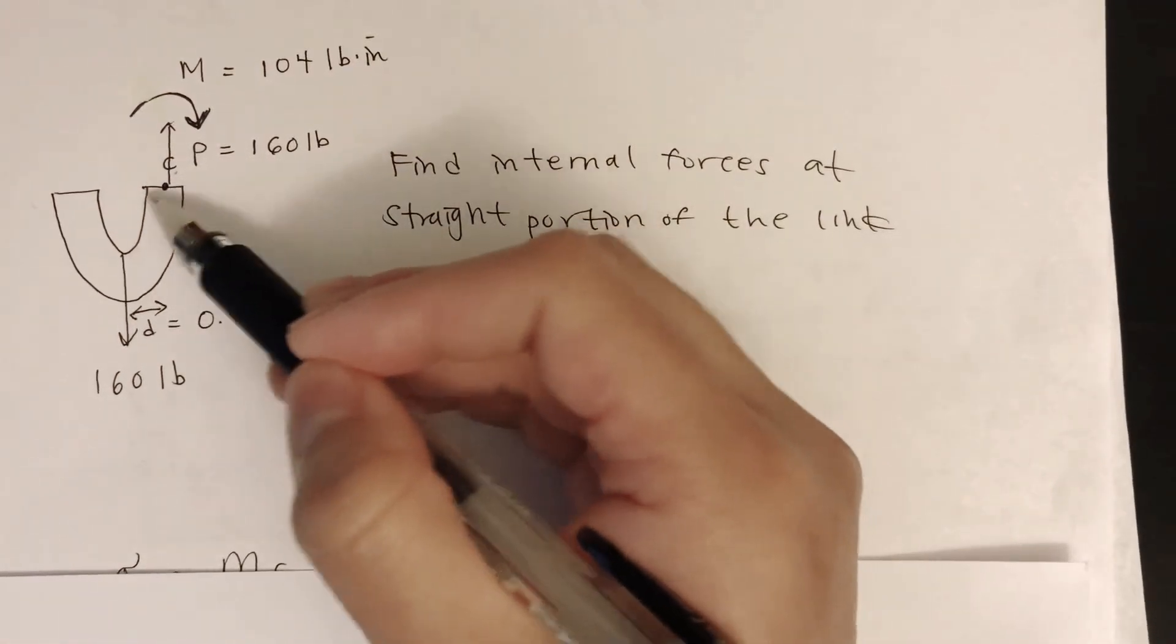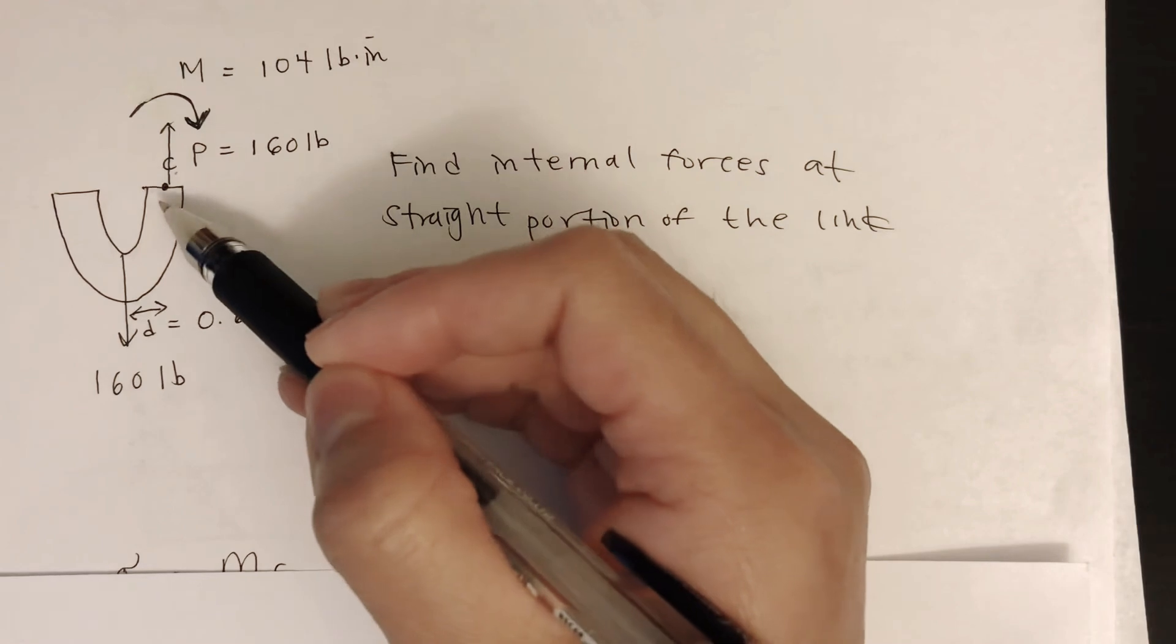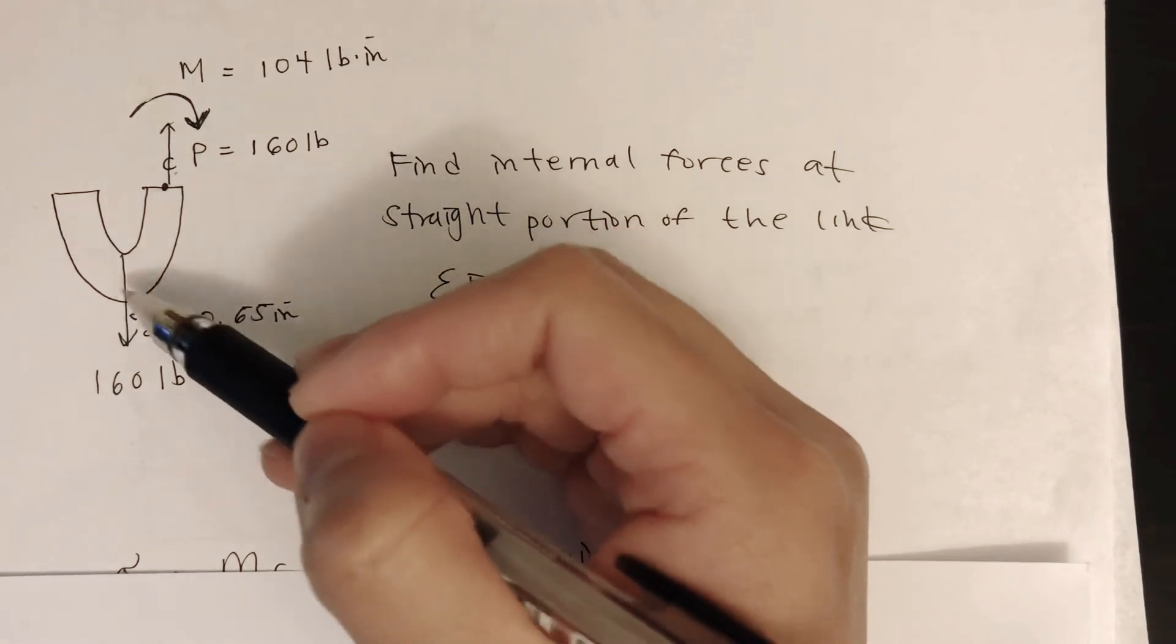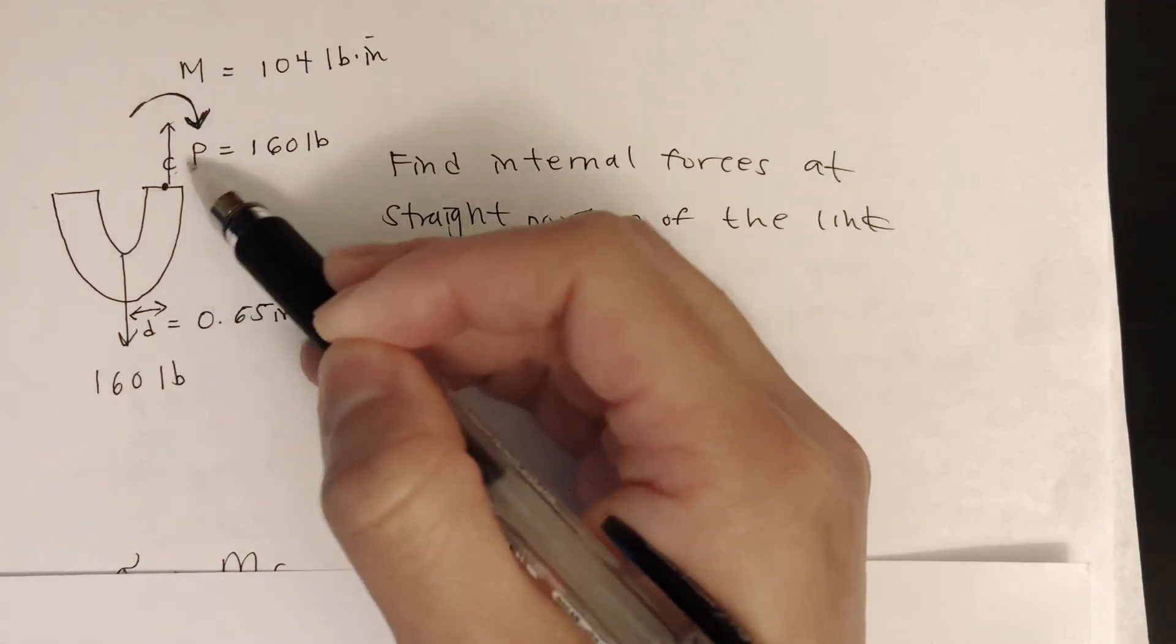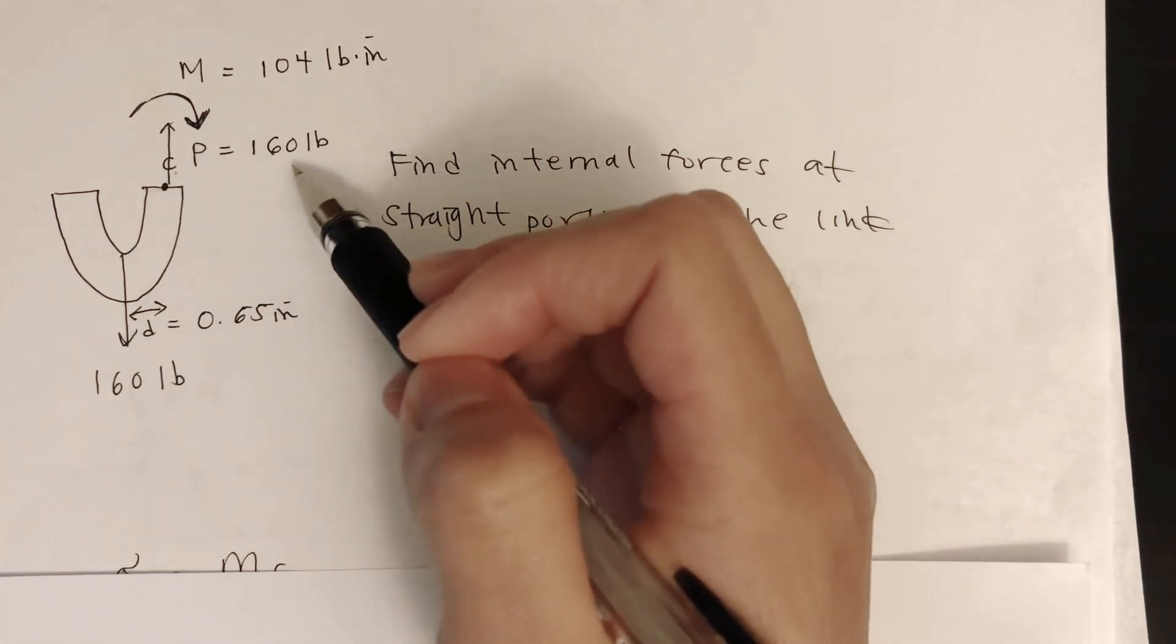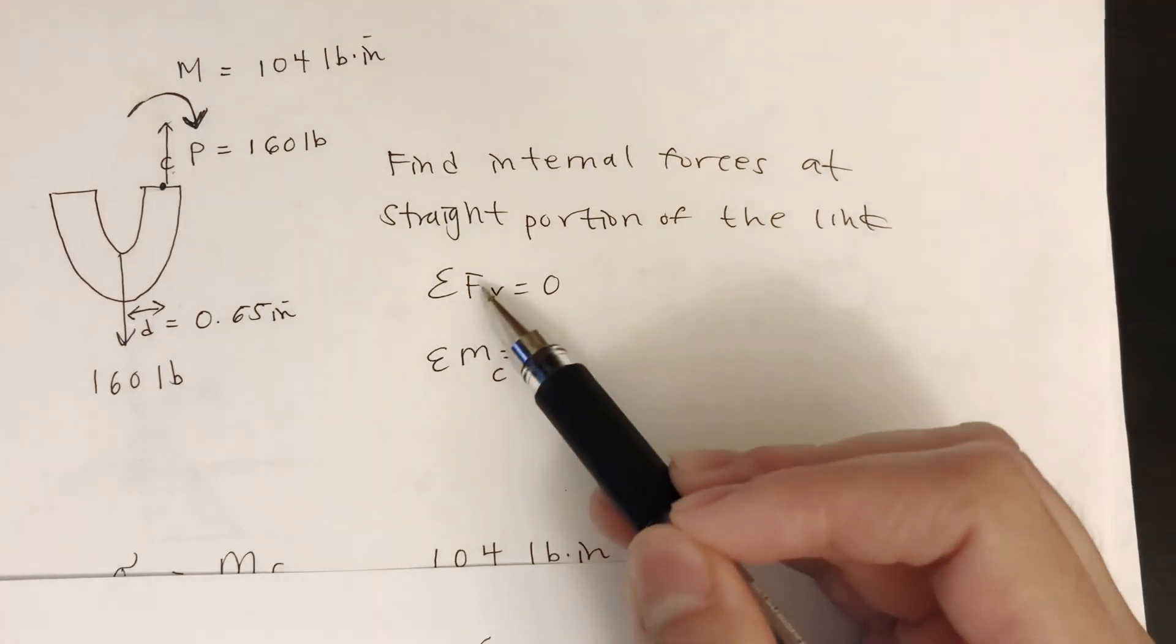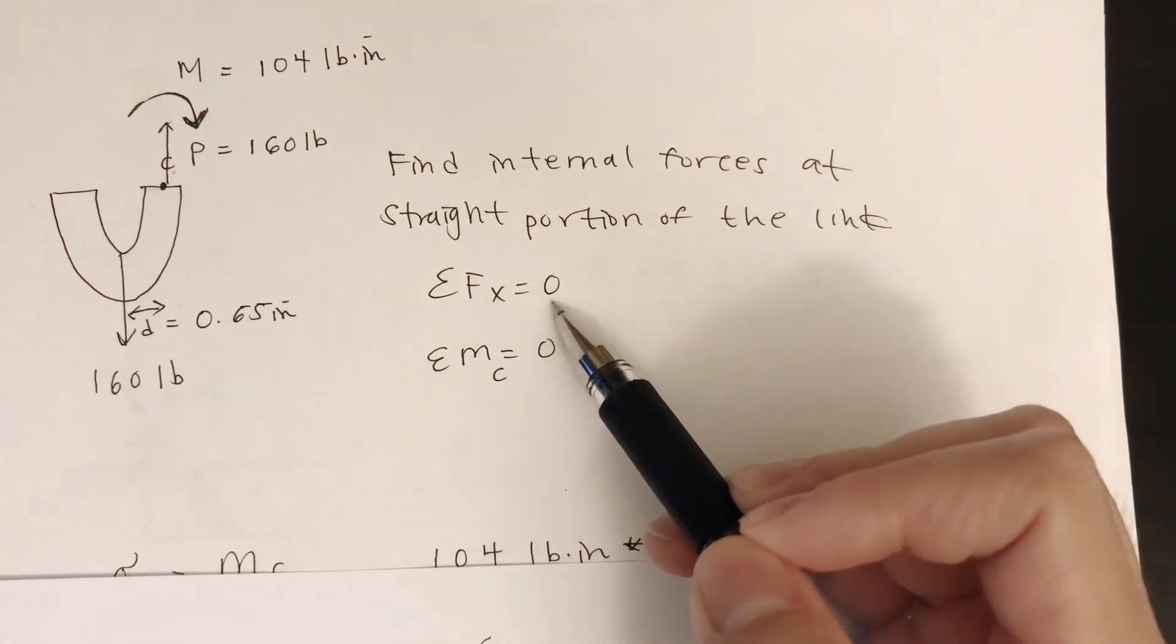We take a cut where the section that the problem states. There is a force downward of 160 pounds, so P is upward 160 pounds when we take the summation of the forces in the x direction equals to zero.